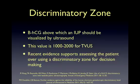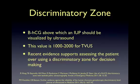The discriminatory zone is the quantitative beta-HCG level above which you should see an intrauterine pregnancy. For transvaginal ultrasound, this value is between 1,000 and 2,000. The discriminatory zone is not used to rule out an ectopic pregnancy. If a patient presents with abdominal pain and has a beta-HCG of 300 and you do not see an IUP, do not assume that she is too early in her pregnancy to see anything. Pay attention to her symptoms and consult OBGYN if you suspect ectopic.